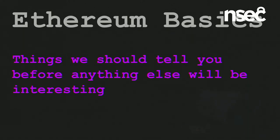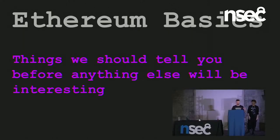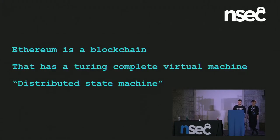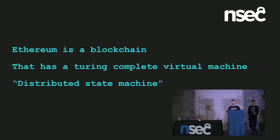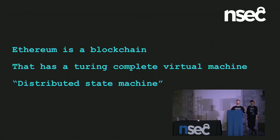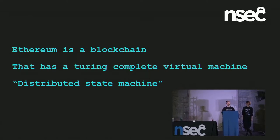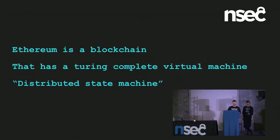Ethereum basics — all the essentials you need to follow the talk. First of all, Ethereum is a blockchain. It's a chain of blocks. It has a Turing-complete virtual machine — that sounds dangerous. And it's a distributed state machine. Many blockchains you could think of as a distributed ledger, but I like to think of this one as a distributed state machine.